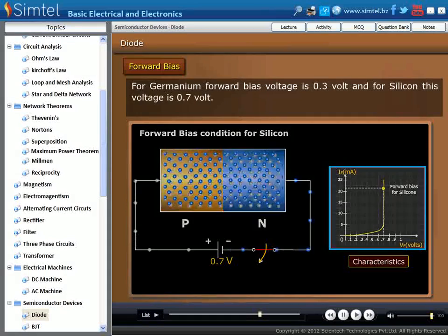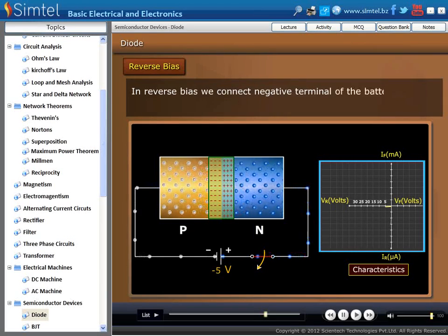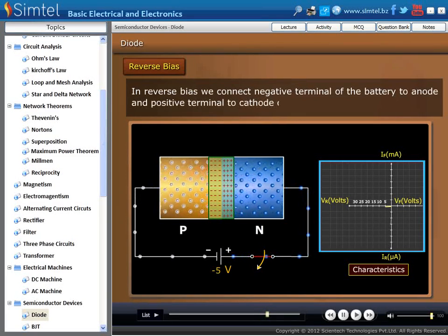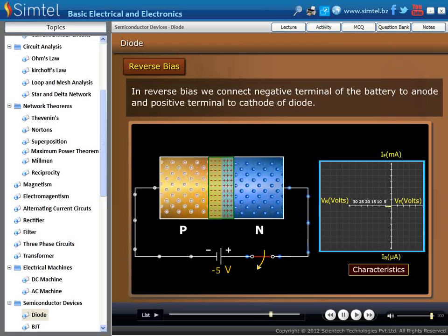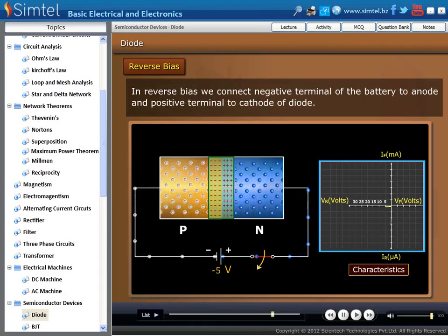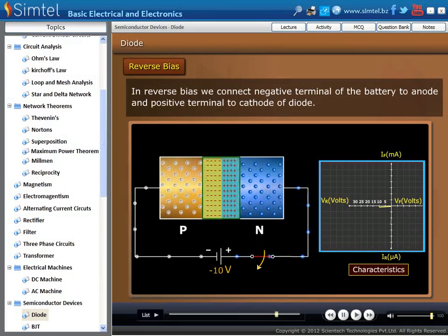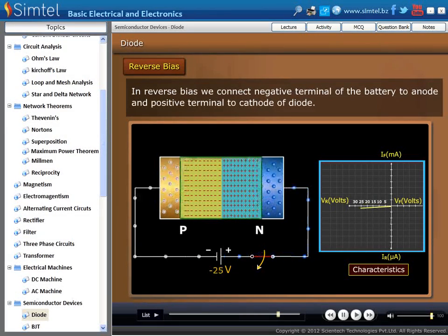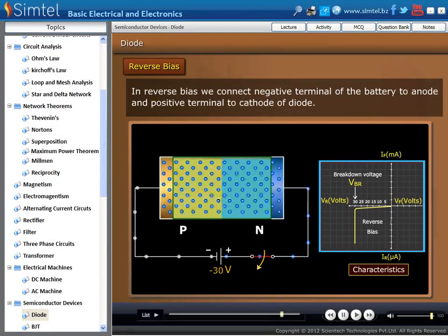Next is reverse characteristics of P-N junction diode. In reverse bias, we connect negative terminal of the battery to anode and positive terminal to cathode of diode. In reverse bias condition, the width of the depletion layer gets increased as the voltage increases in the reverse direction.